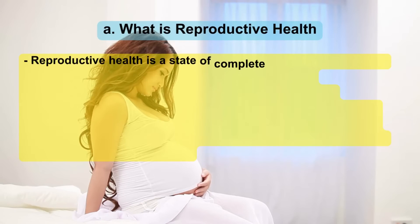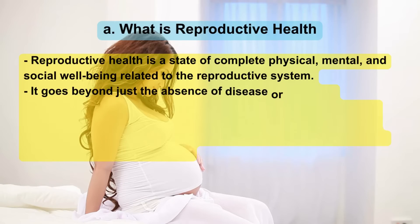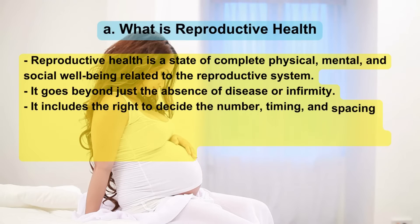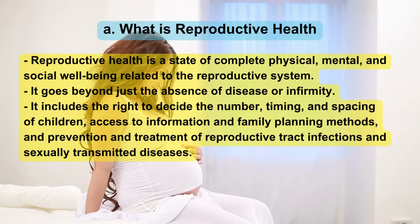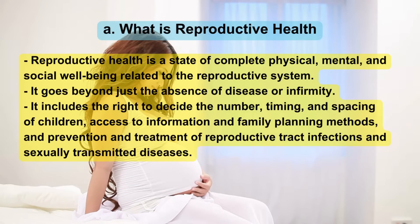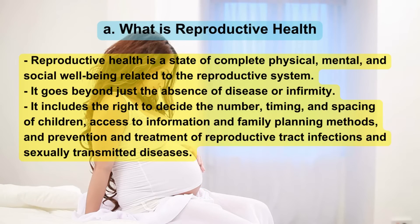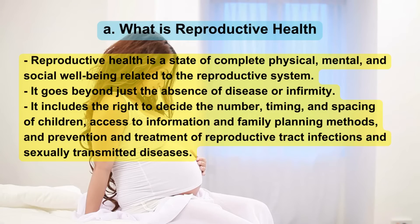What is Reproductive Health? Reproductive health is a state of complete physical, mental, and social well-being related to the reproductive system. It goes beyond just the absence of disease or infirmity. It includes the right to decide the number, timing, and spacing of children, access to information and family planning methods, and prevention and treatment of reproductive tract infections and sexually transmitted diseases.